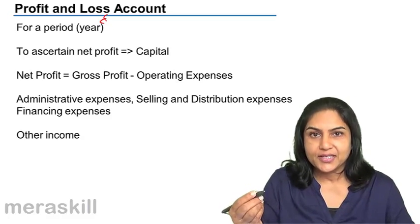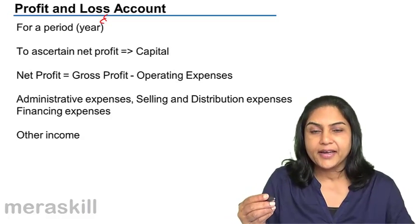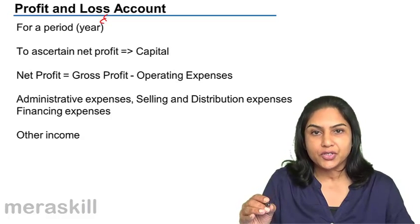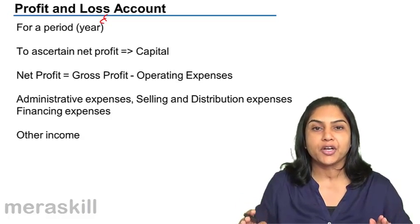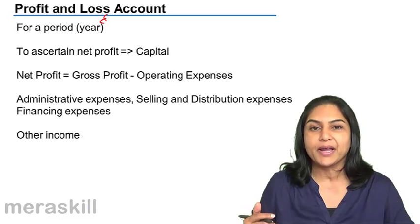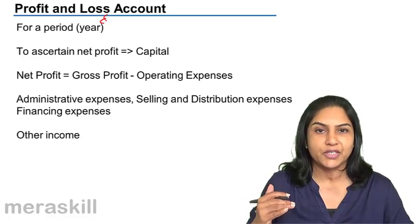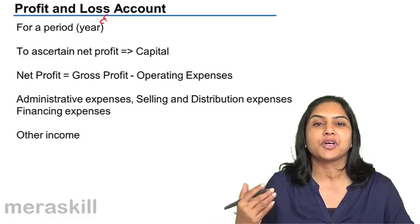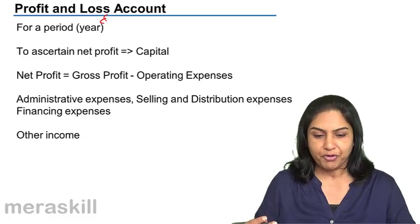As discussed earlier, a financial year in India is from April to 31st March. The trading account and the profit and loss account are both prepared for the same period. Gross profit minus operating expenses gives us the net profit, or a net loss if the operating expenses are greater than the gross profit.